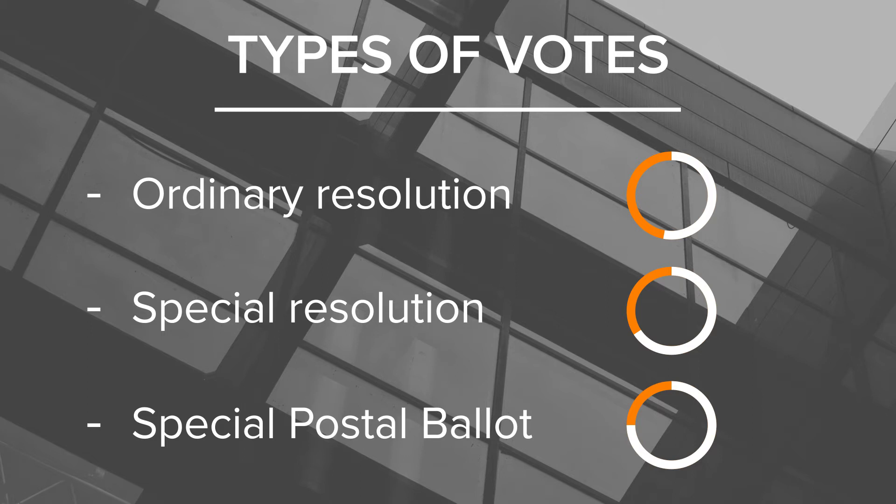These thresholds are slightly different from the Corporations Act, which traditionally uses 50% and three-quarters. You can alter these to make them higher percentages if you wish, though practically it may be difficult to achieve. For example, if you're winding up the cooperative, you might want 90% of people on board given the significance of the decision, and you can specify that level of detail in your rules.